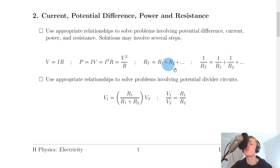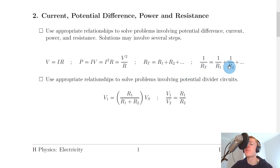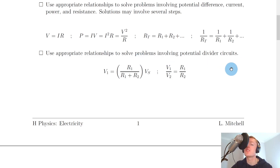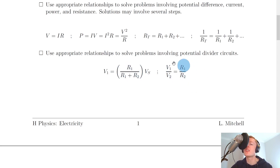We then have the two relationships for total resistance. For a series circuit, R_T equals R1 plus R2 plus dot dot dot — you just add them all together. For total resistance in parallel, we have the relationship one over R_T equals one over R1 plus one over R2 plus dot dot dot. It then says to use appropriate relationships to solve problems involving potential divider circuits. We have two equations: one when the supply voltage V_S is known, and one when it's not known. The first is a ratio of resistances, and the second is a ratio of voltages equal to a ratio of resistances.